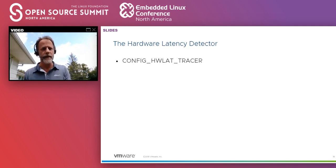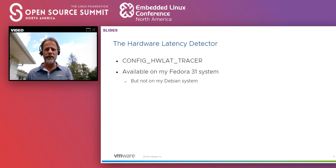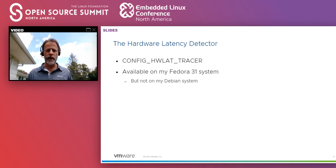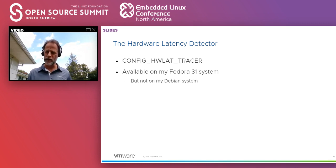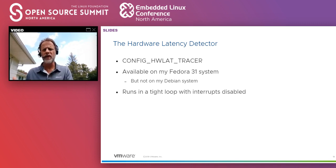So what do we have to detect latency from the hardware? If you look inside your kernel configuration, you'll see something called ConfigHwLatTracer. It's actually available on Fedora 31 — I checked one of my systems and it had the HwLatTracer enabled. When it's off, it doesn't cause any overhead at all. It only adds overhead when you enable it. My Debian systems don't have it enabled, which is unfortunate because it's a useful feature.